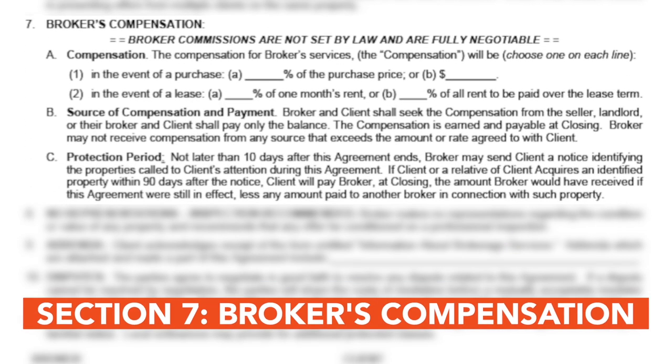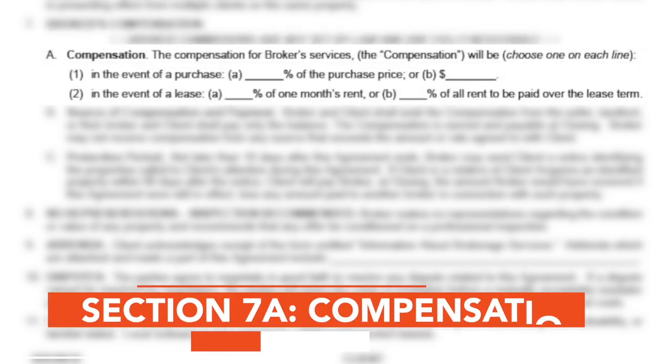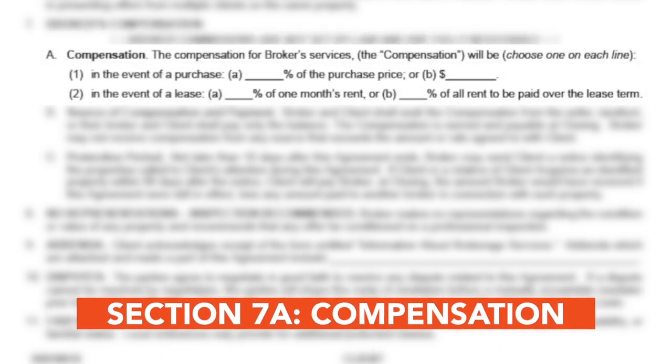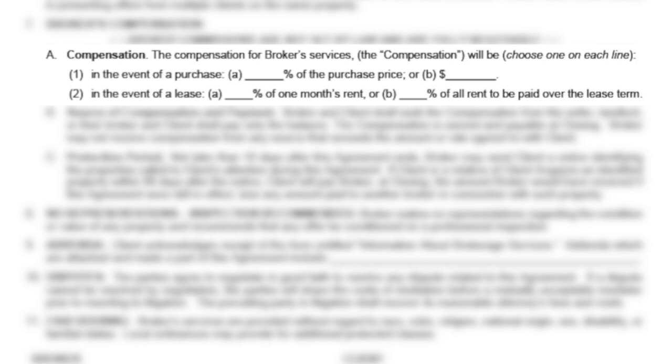The seventh section is broker's compensation. This section starts with the important reminder that broker commissions are not set by law, and they are fully negotiable. This must be disclosed to the parties in written agreements under the unlocked MLS rules. The first part of this section breaks down how compensation will work for a purchase or a lease. The broker will be paid compensation agreed upon by the buyer, in a variety of formats, but it must be clearly defined in this agreement.